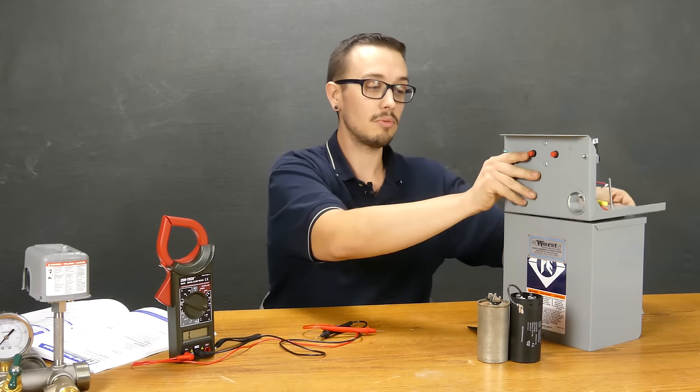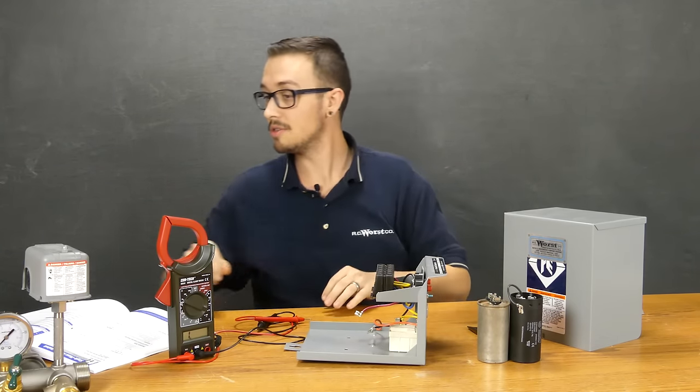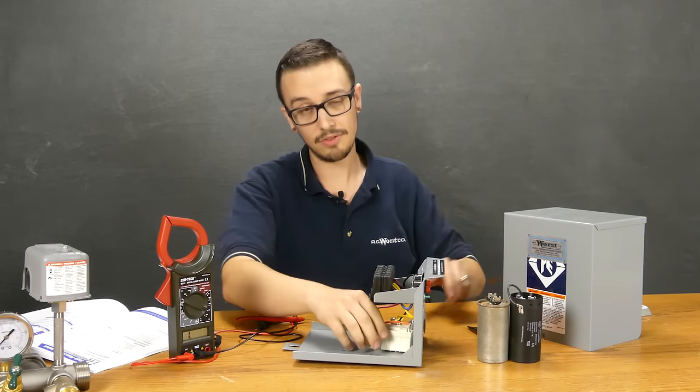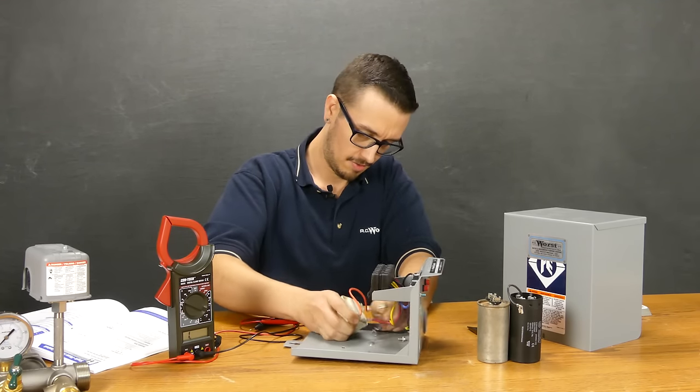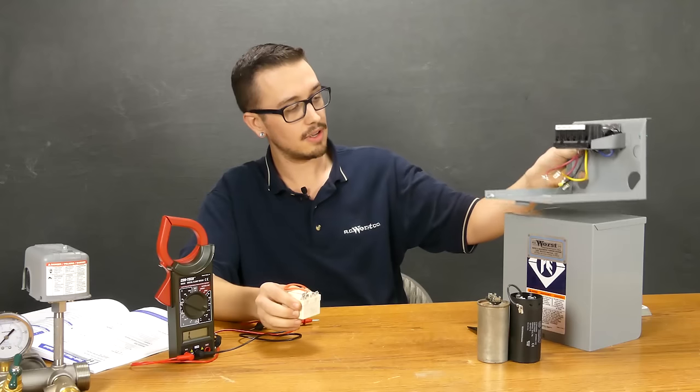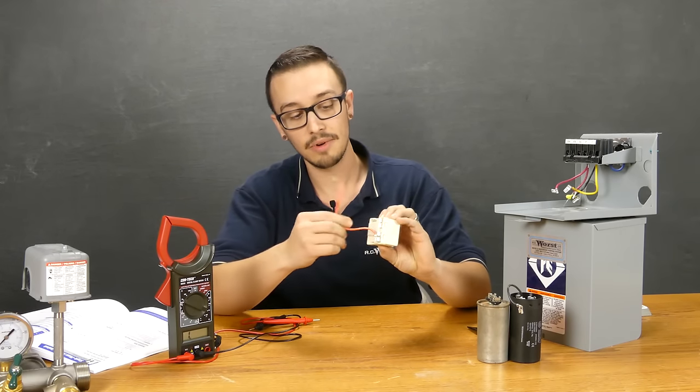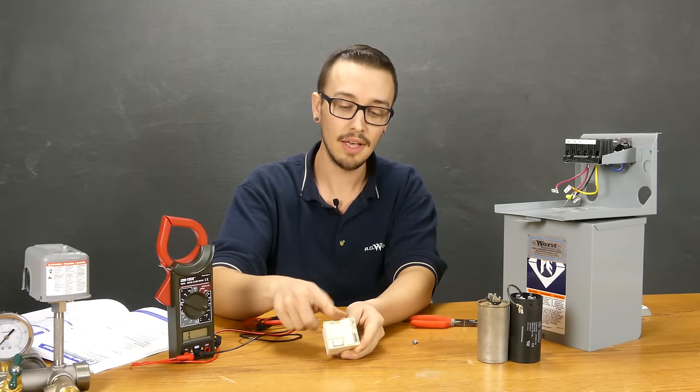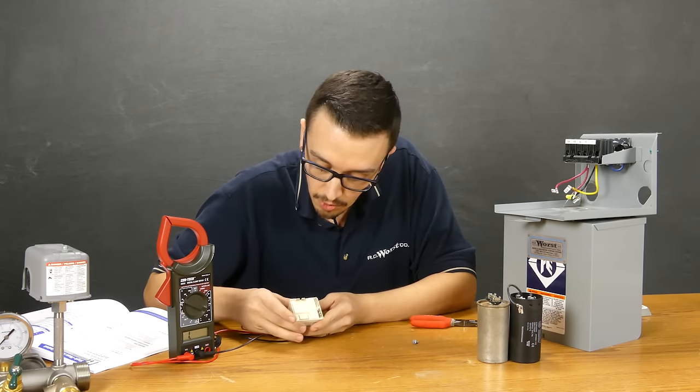The last component within the system is the relay. We'll pop that out of the box here. The relay is unscrewed. We can remove these terminals here just for easy testing. Now we've got our box in total and utter pieces here all over the place. On the relay, we've got a set of different terminals and they're all numbered. Five, two, and four are all numbered here.